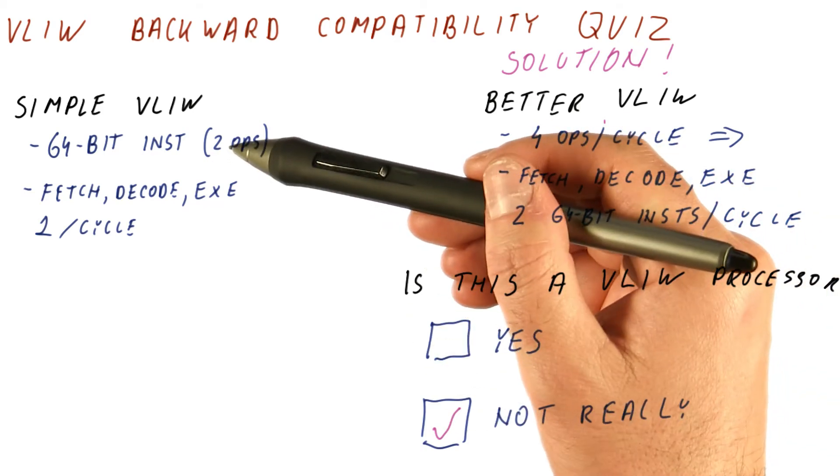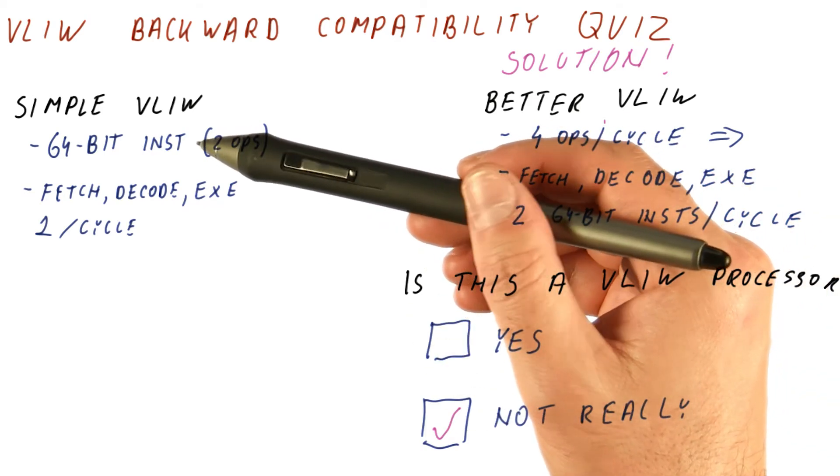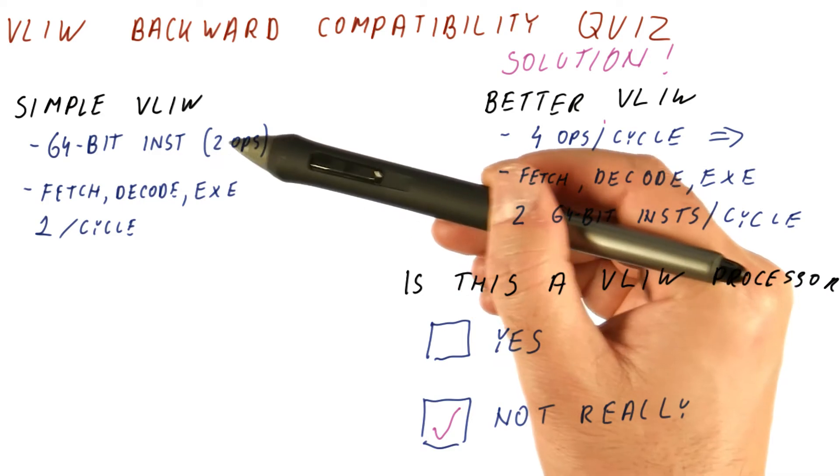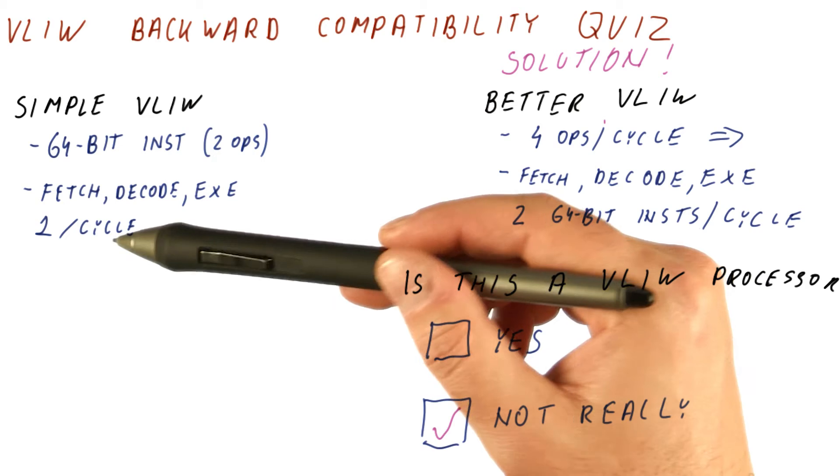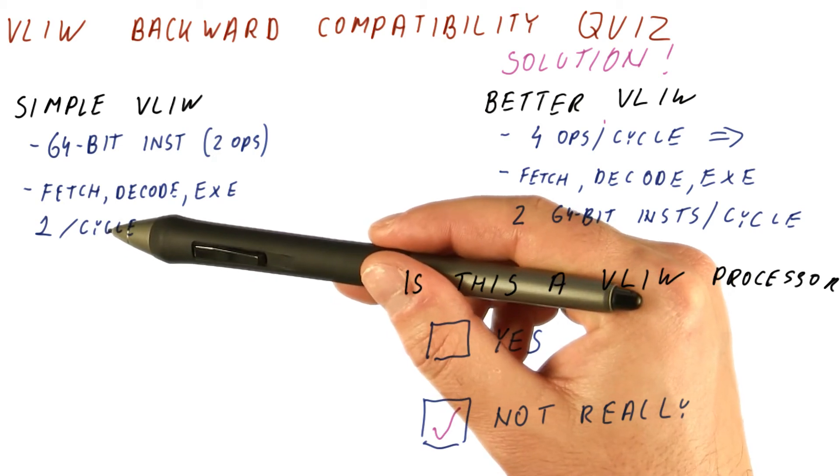Here's why. In a real VLIW processor, the compiler tells us which operations can be done in parallel by putting them in the same instruction, and then we try to do only one of those instructions per cycle.